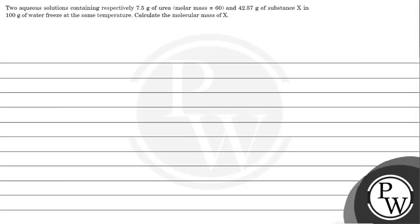Hello, so let's read this question. Two aqueous solutions containing respectively 7.5 grams of urea (molar mass 60) and 42.57 grams of substance X in 100 grams of water freeze at the same temperature. Calculate the molecular mass of X.